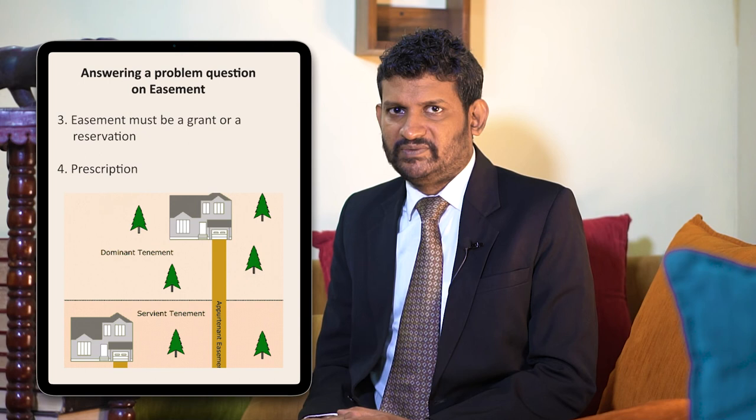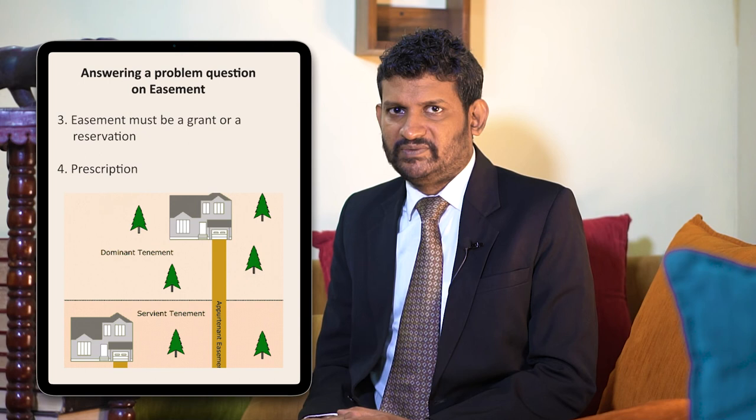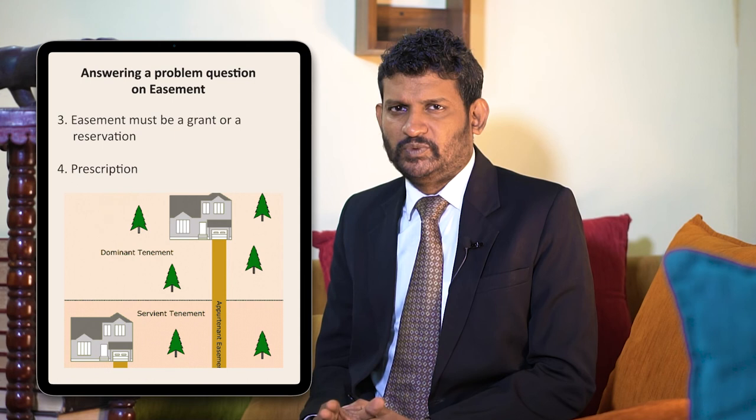The one who enjoys the right would be the dominant owner, and the one whose land the right flows over would be the servient owner, as you can see in this graphical illustration. Make sure you attempt this question in a manner that is very practical, logical, and structured. All the best.